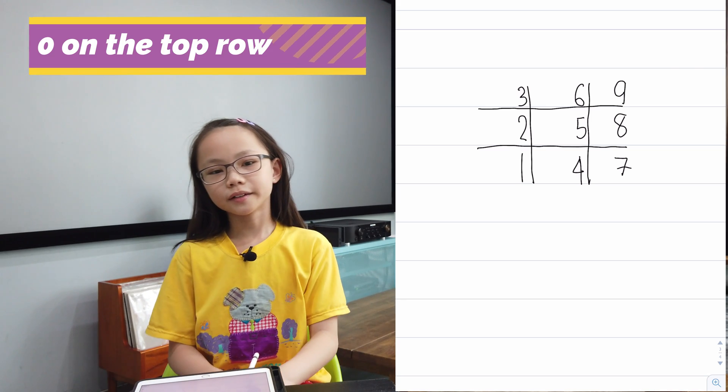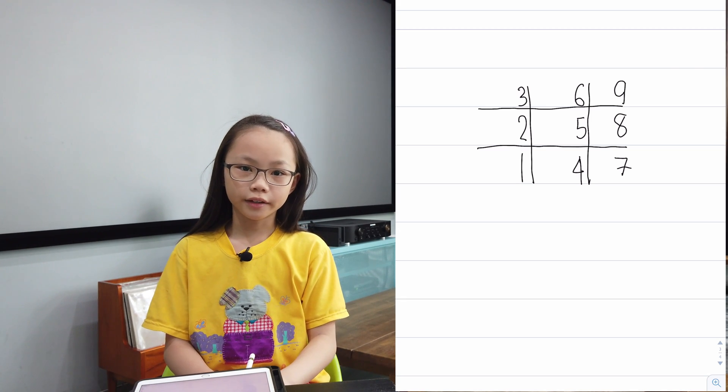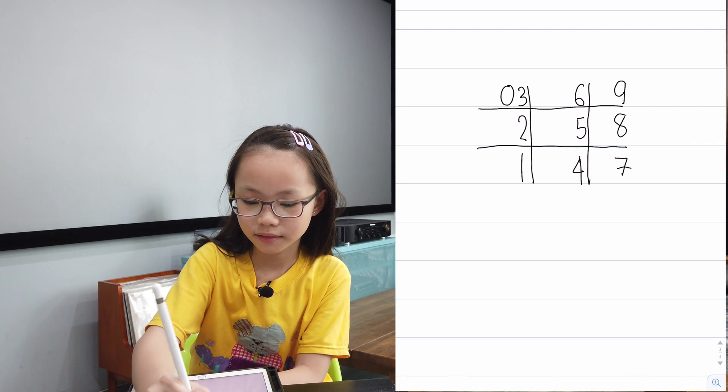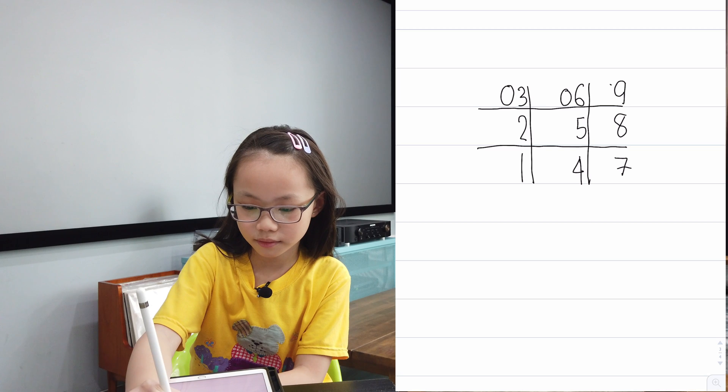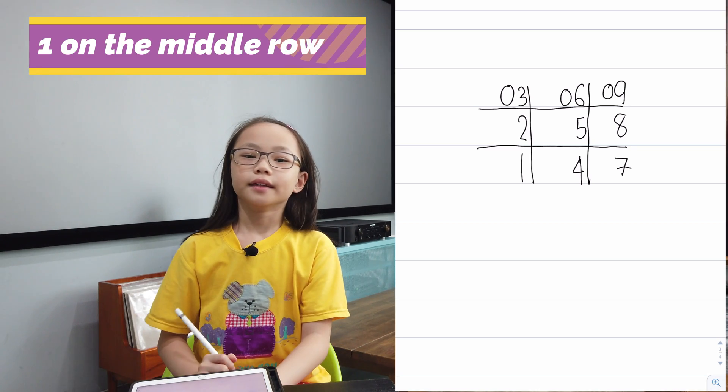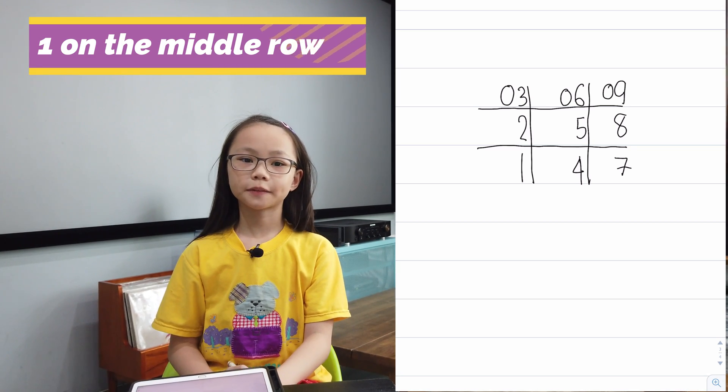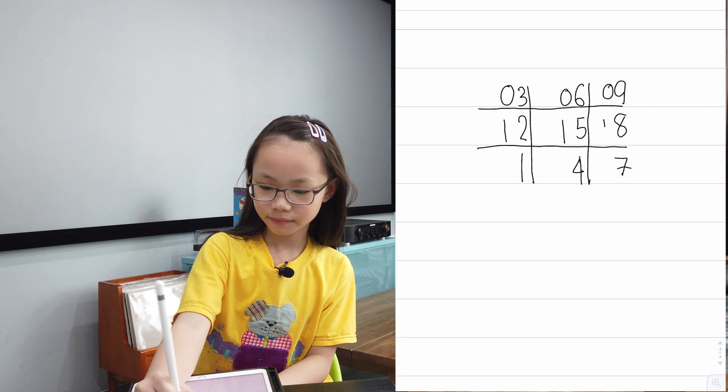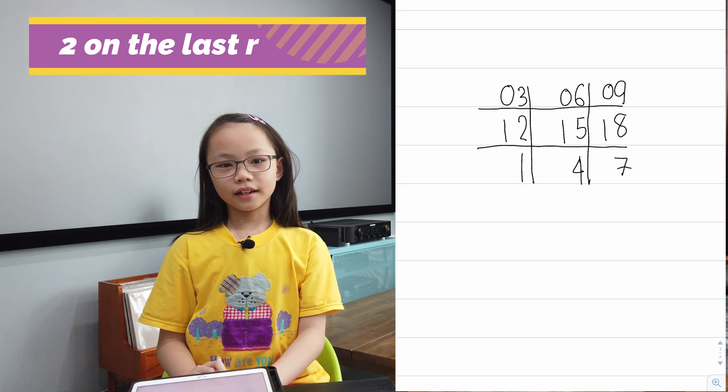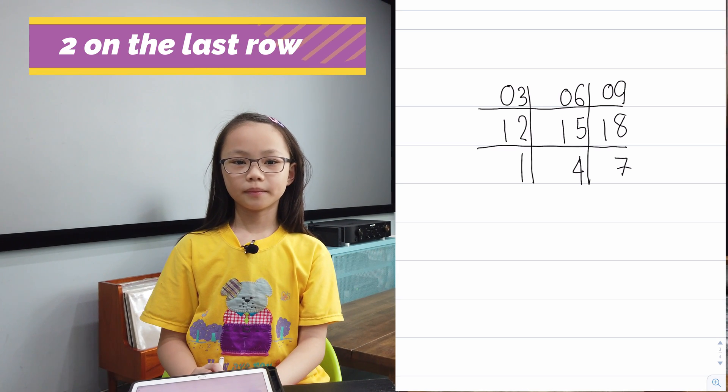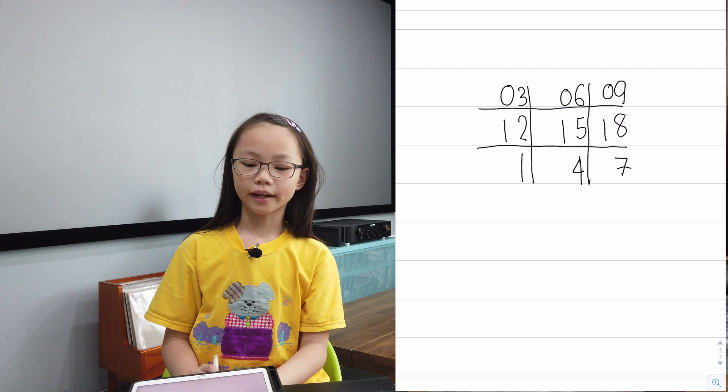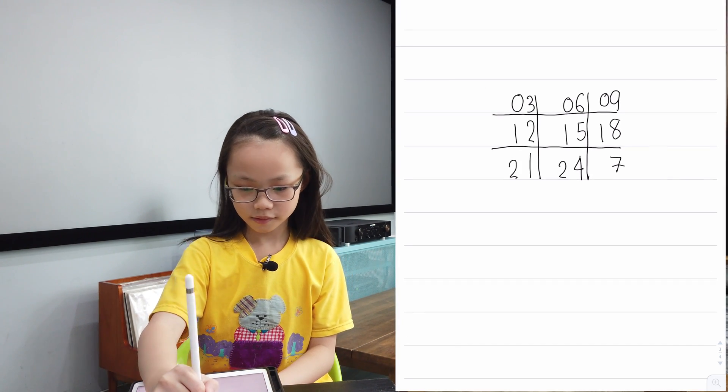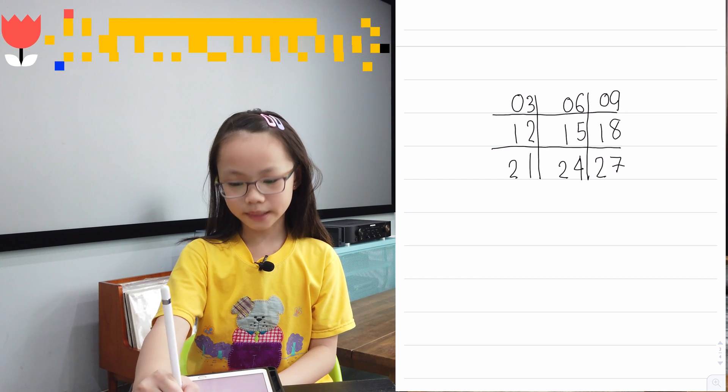Now we're going to write the number 0 on the top row like this. And then in the middle row, we're going to write the number 1 like this. And in the last row on the bottom, we're going to write the number 2 like this. This is the 3x table trick.